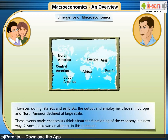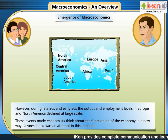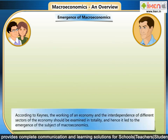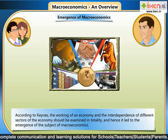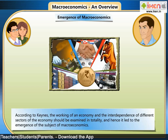However, during the late 1920s and the early 1930s, output and employment levels in Europe and North America declined at a large scale. These events made economists think about the functioning of the economy in a new way. Keynes's book was an attempt in this direction. According to Keynes, the working of an economy and the interdependence of different sectors of the economy should be examined in totality, and hence it led to the emergence of the subject of macroeconomics.